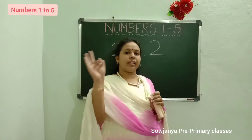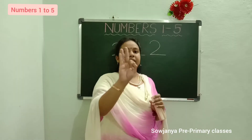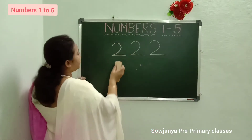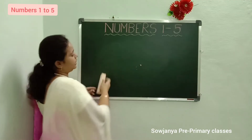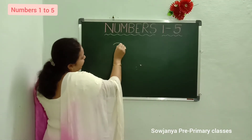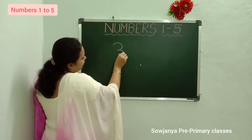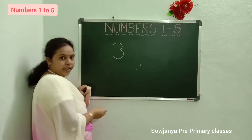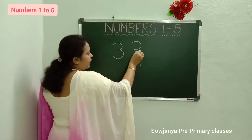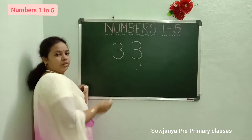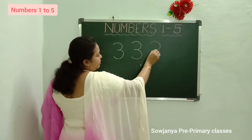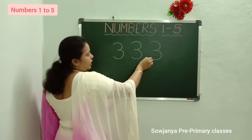What is the next number children? 3. What is the next number? 3. How to write 3? I will tell you this. Write left curve, another left curve. 3. How to write 3? Left curve, another left curve. 3. Left curve, come back and write another curve.